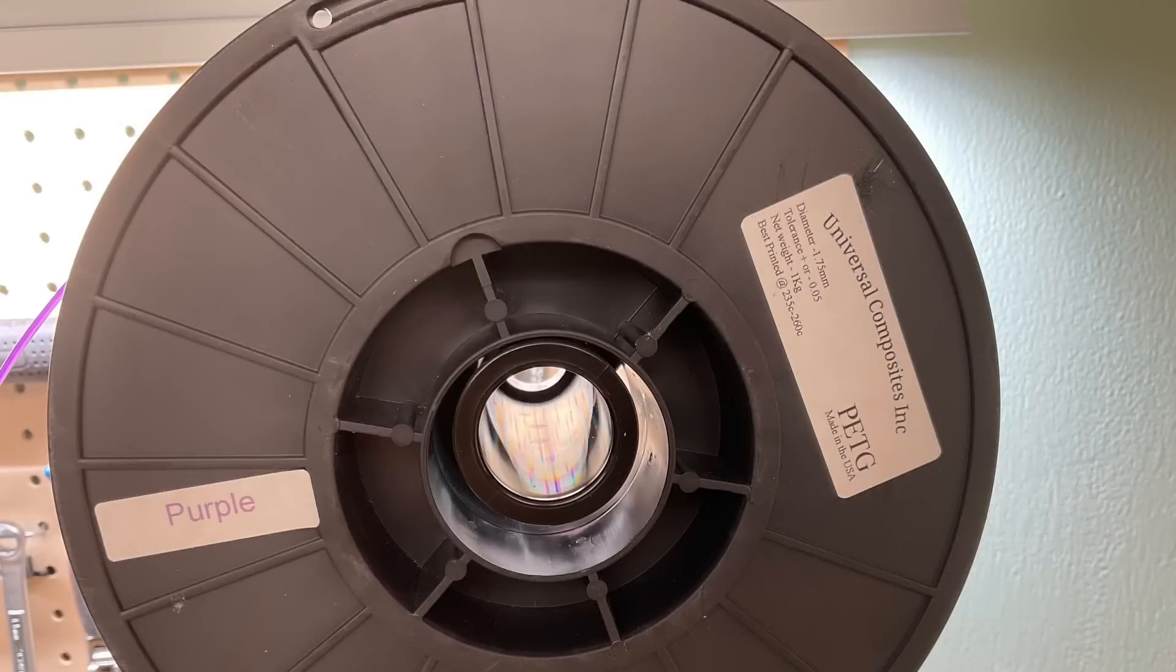I wanted to use a filament that can handle a little higher temperature outside and that's why I chose PETG. I have this PETG from Universal Composites Incorporated. Now it's purple. Normally I would use black for this but I want it to show up in the video so I'm going to use purple against the black fence.